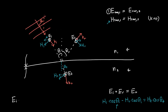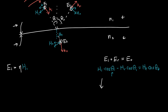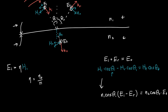We can convert from magnetic to electric fields using the wave impedance eta. On side 1 we have eta_1, on side 2 we have eta_2. Since eta equals eta_0 over the refractive index, after substituting and rearranging, the second boundary condition equation becomes: n1 cos(theta_I) times (E_I minus E_R) equals n2 cos(theta_T) times E_T.